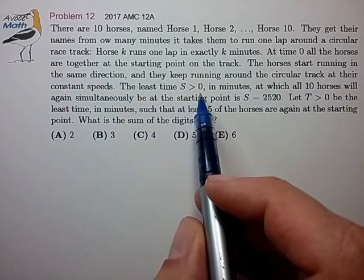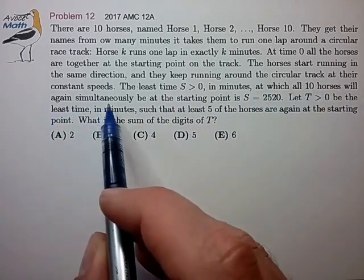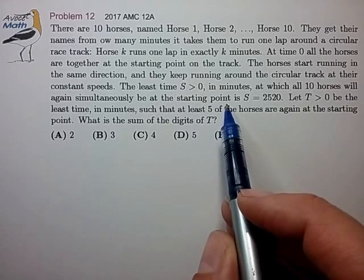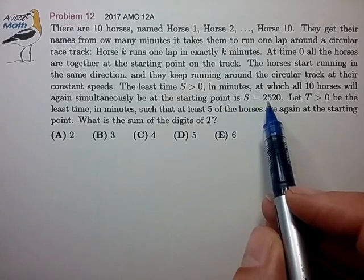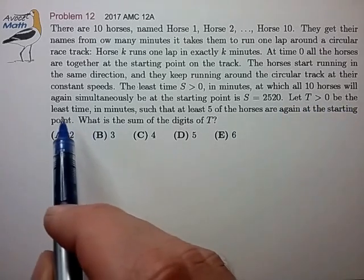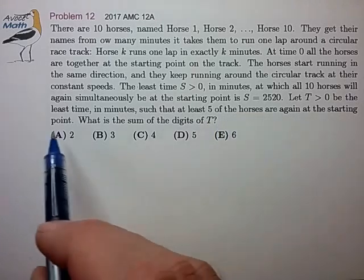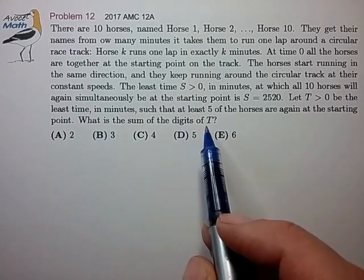The least time S greater than zero in minutes at which all 10 horses will again simultaneously be at the starting point is 2520, and T greater than zero is the least time in minutes such that at least five of the horses are again at the starting point. What is the sum of the digits of T?